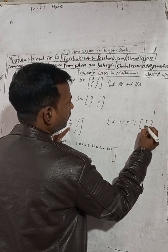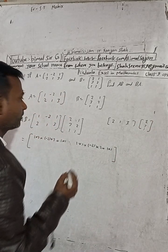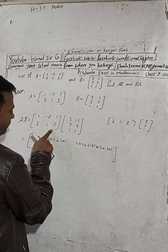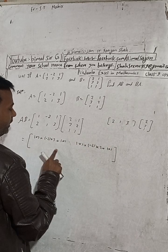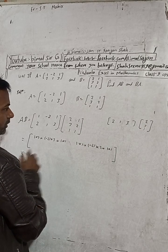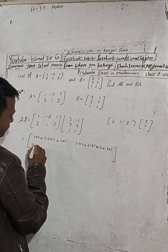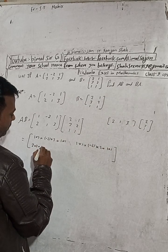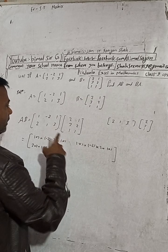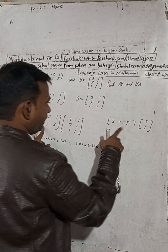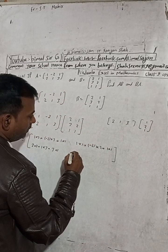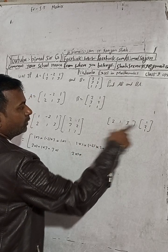Now we take the second row of A: 2, 1, 3 and the first column of B: 2, 3, 1. So we compute: 2×2 + 1×3 + 3×1. Then for the second row and second column: 2×1 + 1×2 + 3×1.